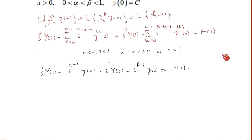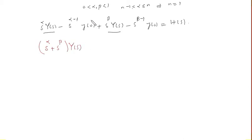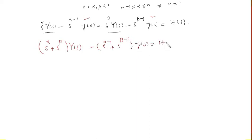Now we take Y(s) common from the relevant terms, giving (s to the power alpha + s to the power beta) times Y(s), and for the remaining terms we take y(0) common, leaving minus (s to the power alpha−1 + s to the power beta−1) times y(0), equal to H(s).